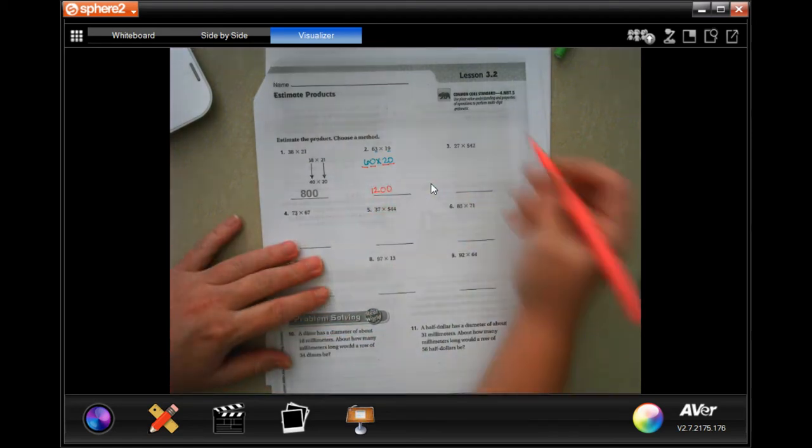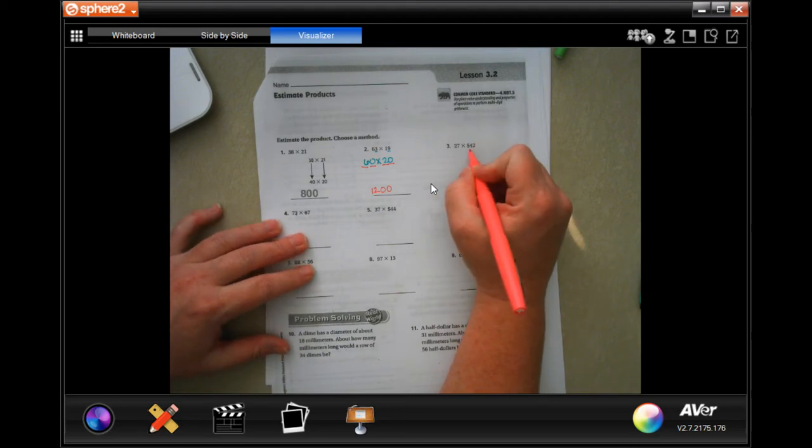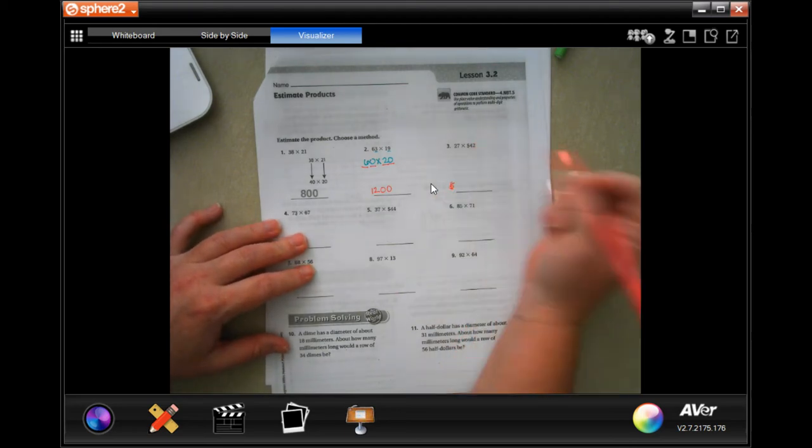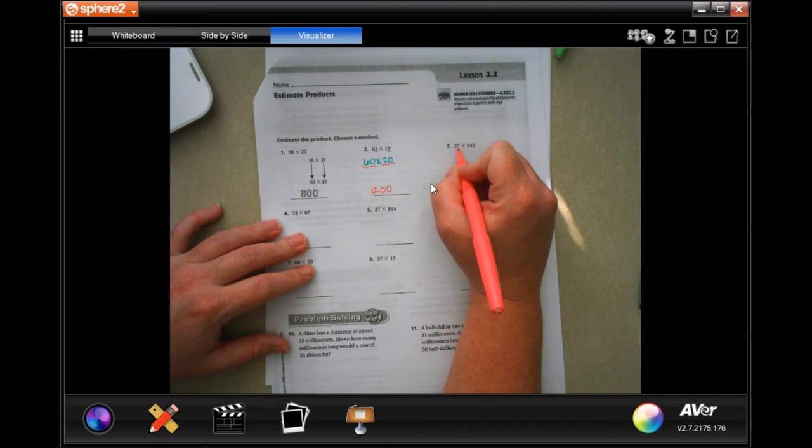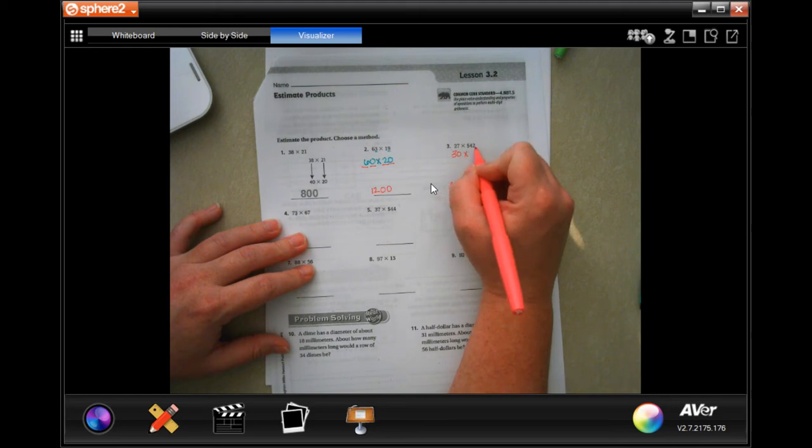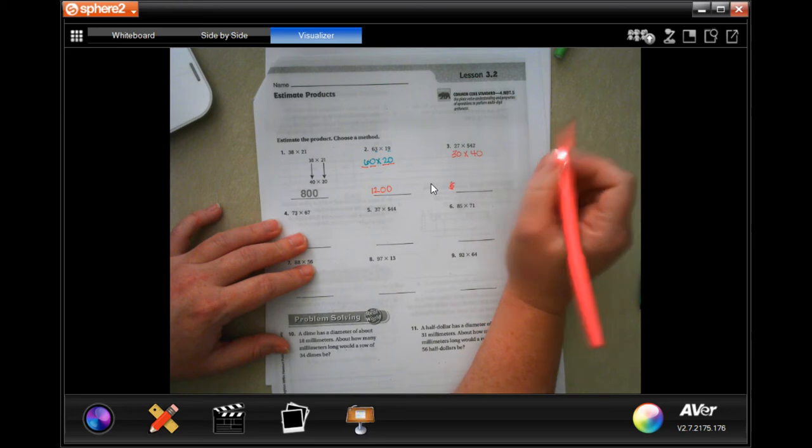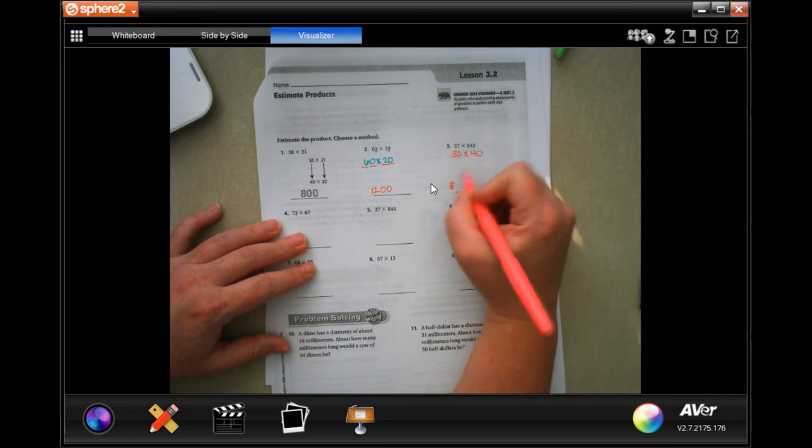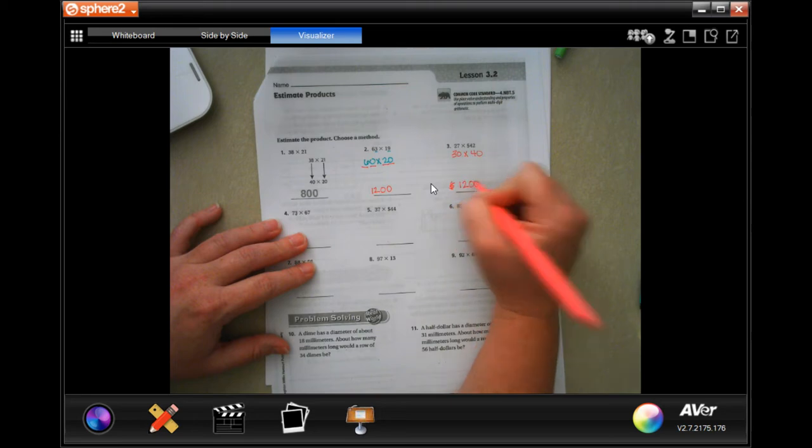So let's do it again. Whatever answer is on this one, we need to make sure we have a dollar sign in front of it. So 27, the seven is bigger than five, so it's going to round to 30. The two is smaller than five, so that's going to stay 40. So now three times four, twelve plus zero and zero. There we go.